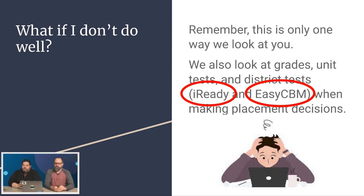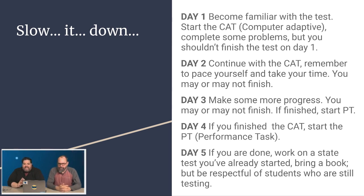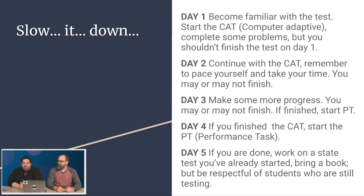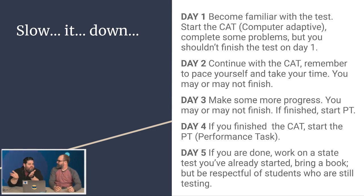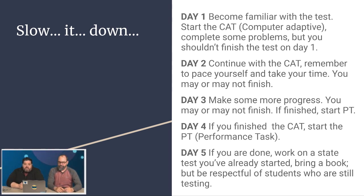Now we're going to look at the process of how we're going to do this. Day one: become familiar with the test and start with the CAT test — the computer adaptive test. Read the problem, see the questions, and answer them. Day two: continue with the CAT test. We're looking at two full days on the CAT. Day three is where we start to transition — finish up the CAT, and if you finish it, go ahead and start the performance test. Day four, you should be fully in the PT. Day five, you should be finishing up the PT.